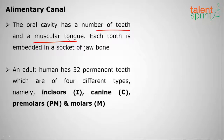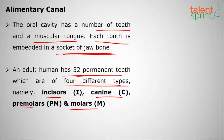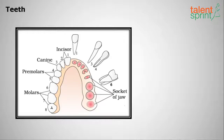The oral cavity has a number of teeth and a muscular tongue. When food contacts saliva, the teeth take action — we chew our food and some complex molecules are broken down into smaller molecules. Each tooth is embedded in a socket of jaw bone. An adult human has 32 permanent teeth of four different types: incisors, canines, premolars, and molars — 4 incisors, 2 canines, 4 premolars, and 6 molars, giving 16 on each side, totaling 32.